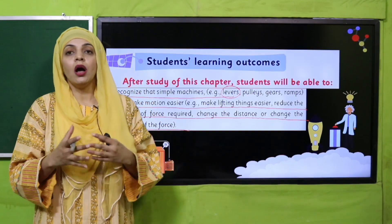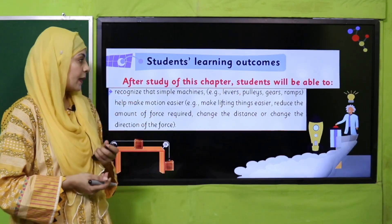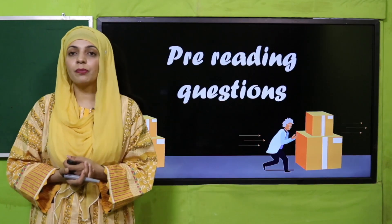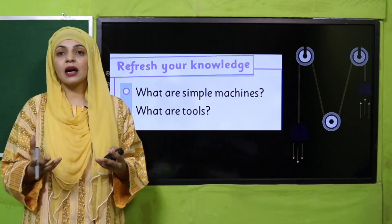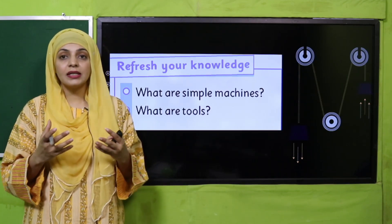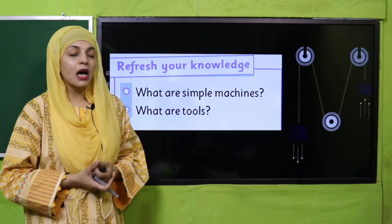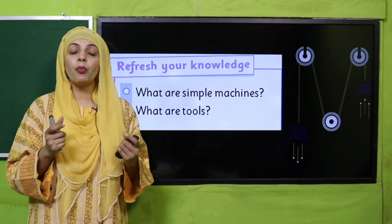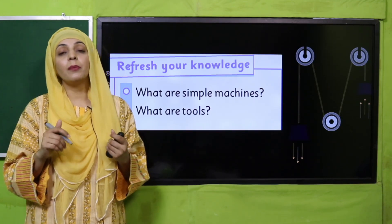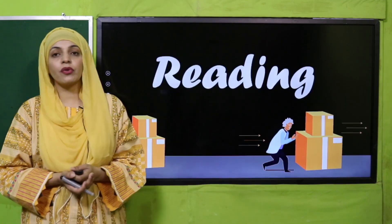Today we will specifically discuss the lever — how it reduces the effort required, saves time, and makes our work easier. Now for the pre-reading question: what are simple machines? Simple machines are any machines that make our work easier, and they are operated using human effort. What are tools? Tools also make our work easy — we use them daily to open or handle things.